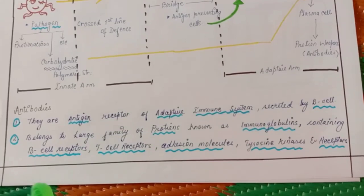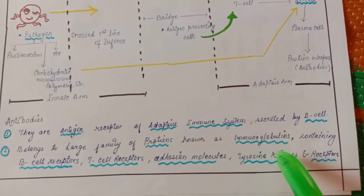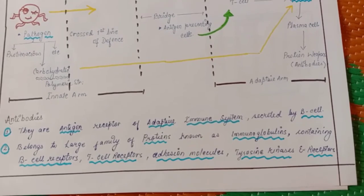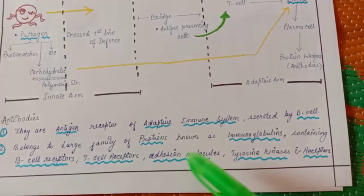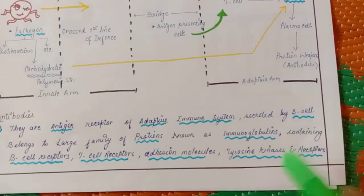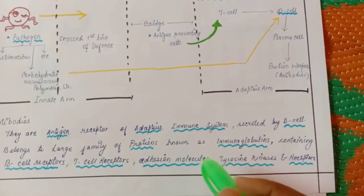They belong to a large family of protein which is known as immunoglobulins. Remember, immunoglobulin is not another name of antibody. These immunoglobulins not only contain antibody but they contain B cell receptor, T cell receptor, adhesion molecules, tyrosine kinases and other receptors also including your antibodies.